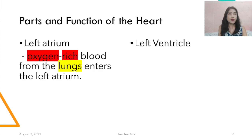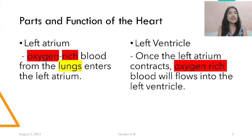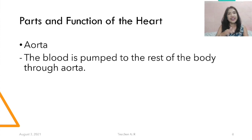The left atrium — oxygen-rich blood or oxygenated blood from the lungs will enter the left atrium. Once the left atrium contracts, the oxygen-rich blood will flow into the left ventricle. And the aorta — the blood is then pumped to the rest of the body via the aorta.